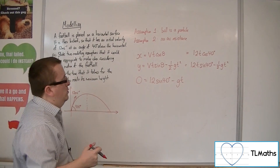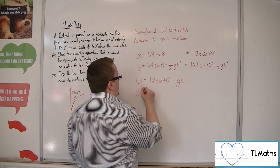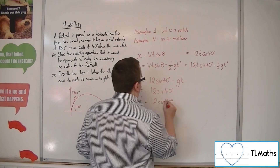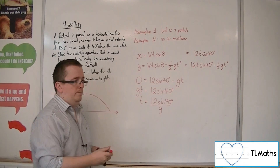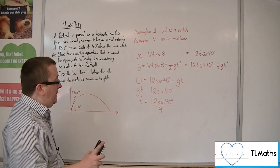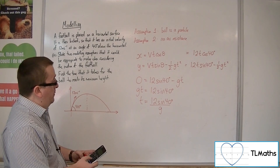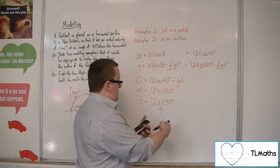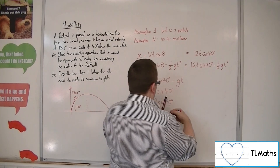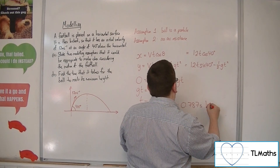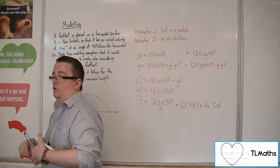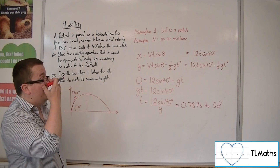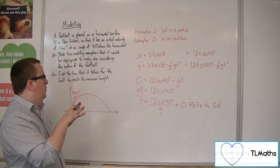So gt equals 12 sin 40, which means t equals 12 sin 40 divided by g. Taking g as 9.8, we have t equals 12 times sin 40 divided by 9.8, which gives 0.787 seconds to 3 significant figures. That is how we can deal with this modelling situation of this football as a projectile.